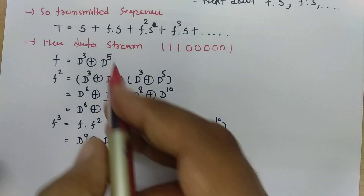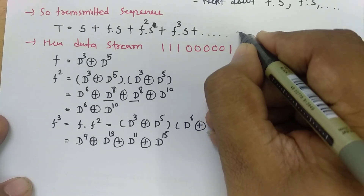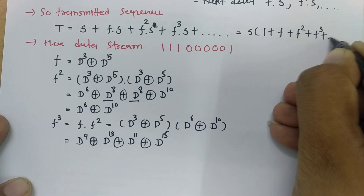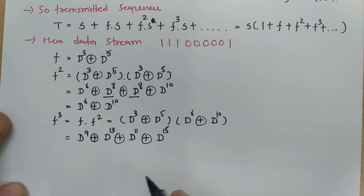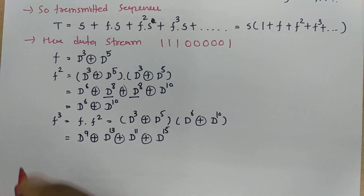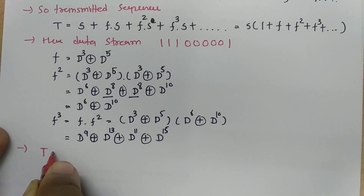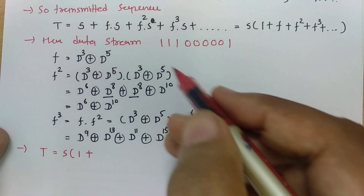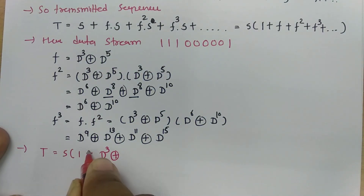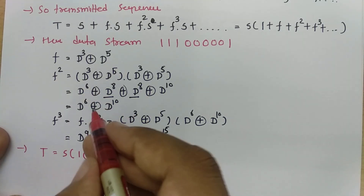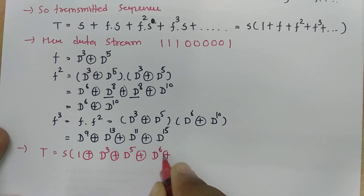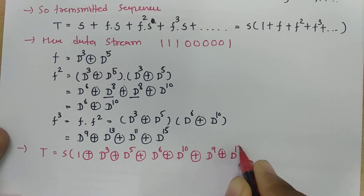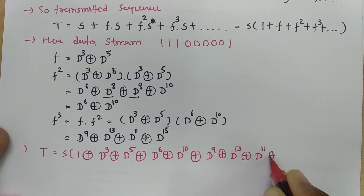Based on the transmitted sequence, we can take s common. So if you take s common, it will be s into (1 + f + f² + f³ + ...). Now that will get resolved to: t = s into (1 + d³ + d⁵ + d⁶ + d⁹ + d¹⁰ + d¹¹ + d¹³ + d¹⁵).